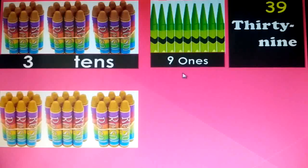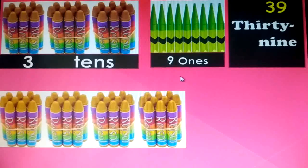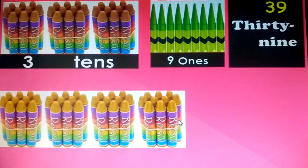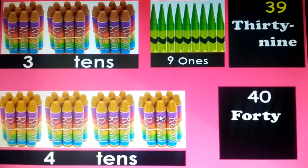Now look here students — after 9, which number comes? 10. Remember that when we have 10 things, one bundle is made. We already had 3 bundles; now here we have one more bundle. 9 ke baad number 10 hona tha, uska matlab ek bundle ban gaya. So 3 tens plus 1 more ten gives us 4 tens — and 4 tens means 40. F-O-R-T-Y, 40.